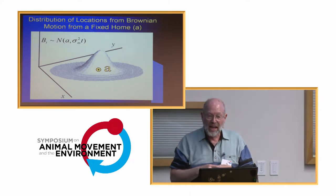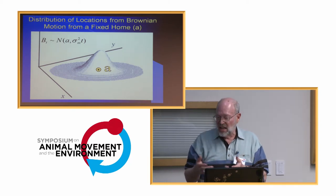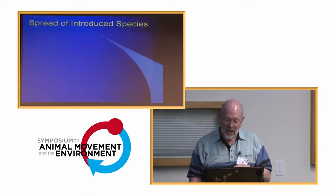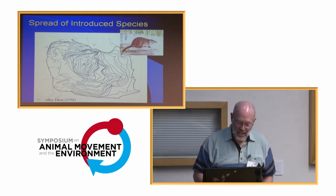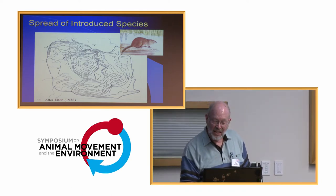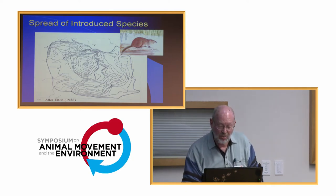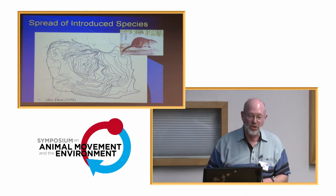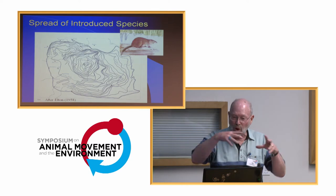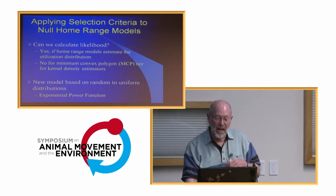Does that really make sense in biology? Here's an interesting example from Elton in 1958 — he looked at the spread of muskrats when introduced in Europe and how they spread through time. It looks exactly like the kind of theoretical distribution we were talking about. The idea of a normal distribution describing movement from a central place makes tremendous biological sense.